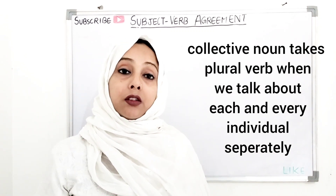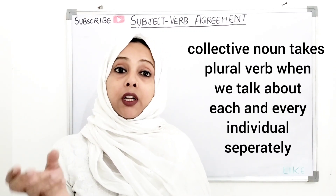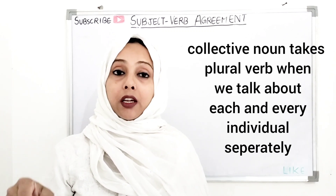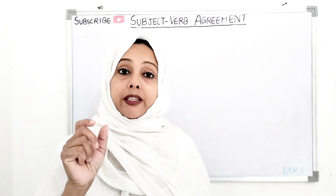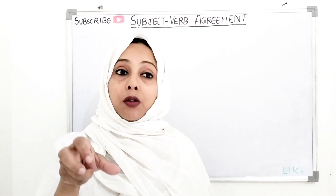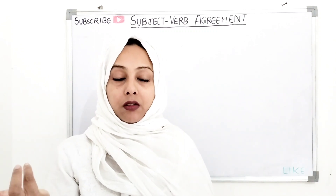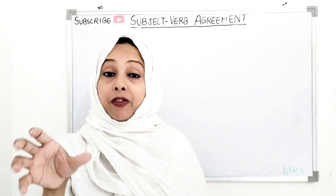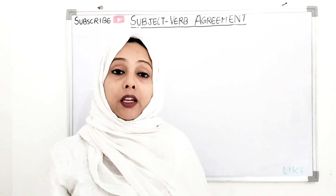If we have used a collective noun in a sentence and we are talking about each and every individual member, then it agrees with a plural verb. For example: 'The committee is divided on one minor point.' Here, I am using committee because it has been divided on a minor point — meaning each individual member of the committee is affected differently. I am mentioning each individual, so I am using a plural verb.